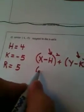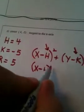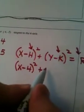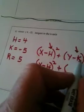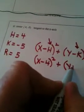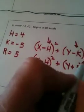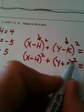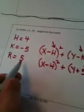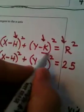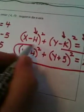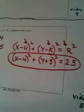So this would become (x - 4)². Because k is negative, minus a minus is going to make this a plus. So we have (y + 5)². r is 5, 5² would be 25. And that is my answer.